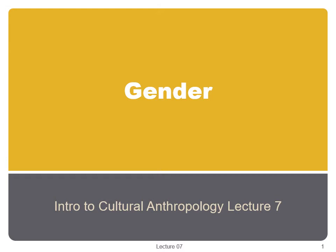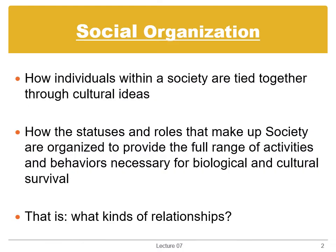The last two lectures have looked at subsistence and the economy, two social institutions that satisfy people's basic needs. Now, with those needs met, we can start talking about how people form relationships and groups. For the next several weeks, leading up to and after the midterm, we'll be examining social organization, which is how individuals within a society are tied together through cultural ideas — how the statuses and roles that make up society are organized to provide the full range of activities and behaviors necessary for biological and cultural survival.